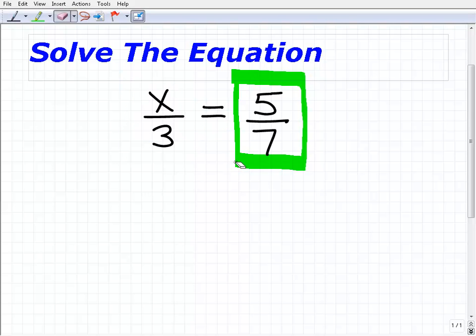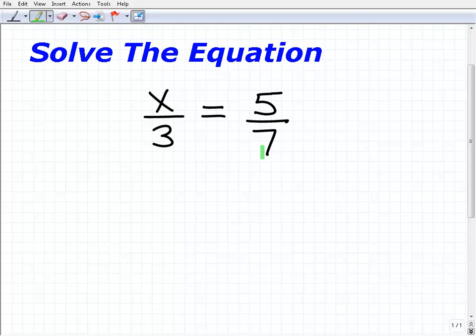I'm going to use this concept called the cross product in order to rewrite this equation in an easier way. So cross product states the following: if you have one fraction equal to another fraction—okay, they have to be one exact one on both sides of the equation.